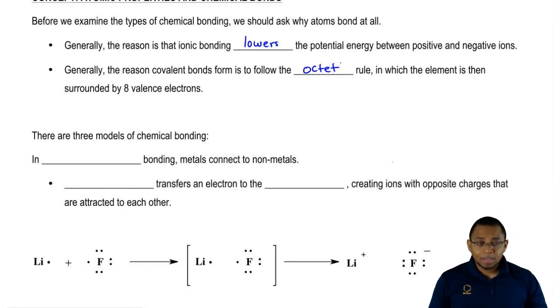We'll learn that some elements usually follow the octet rule, but there are others that break them. Some may have less than eight valence electrons. Some may have more than eight valence electrons. When we come to those topics, we'll see them more in depth.